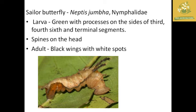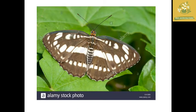The larva of the sailor butterfly is green with processes on the sides of the third and fourth segments, as well as on the terminal segments, and it also has spines on the head. The adult has black wings with white spots, which is the identification feature of the adult. Here is a picture of the sailor butterfly.